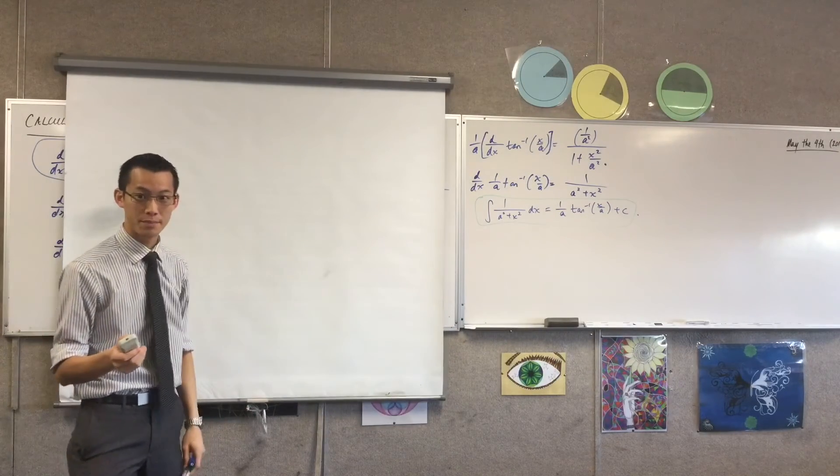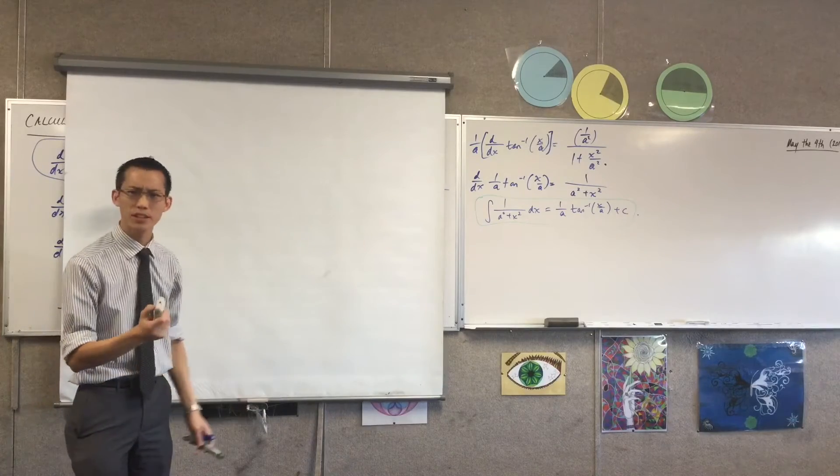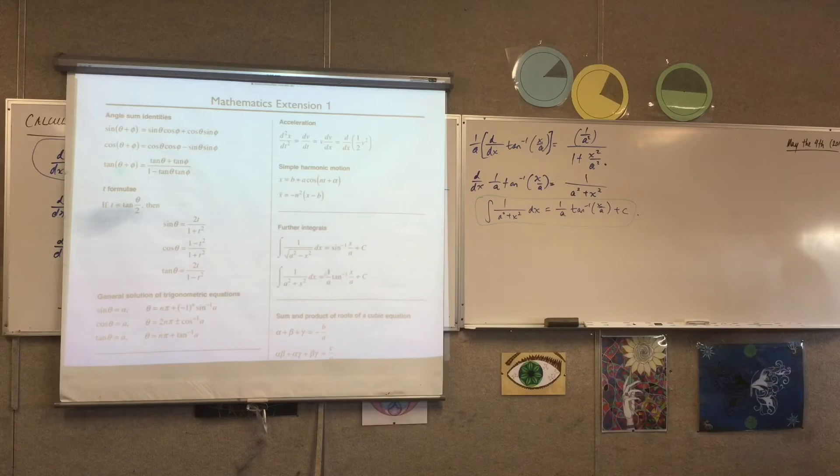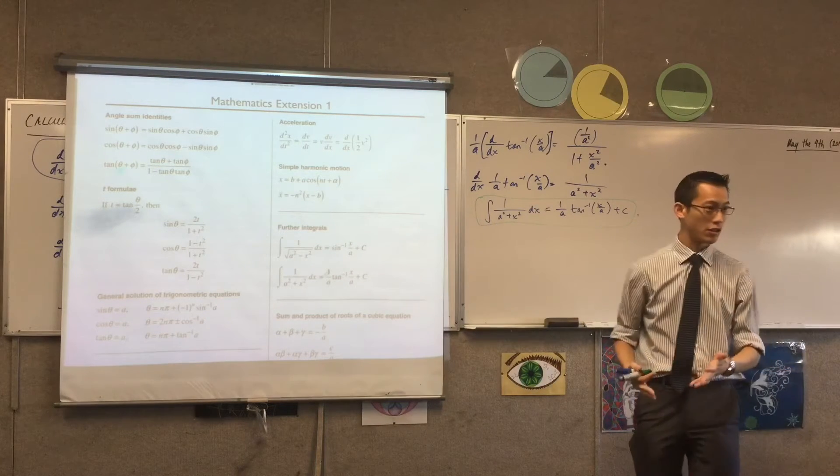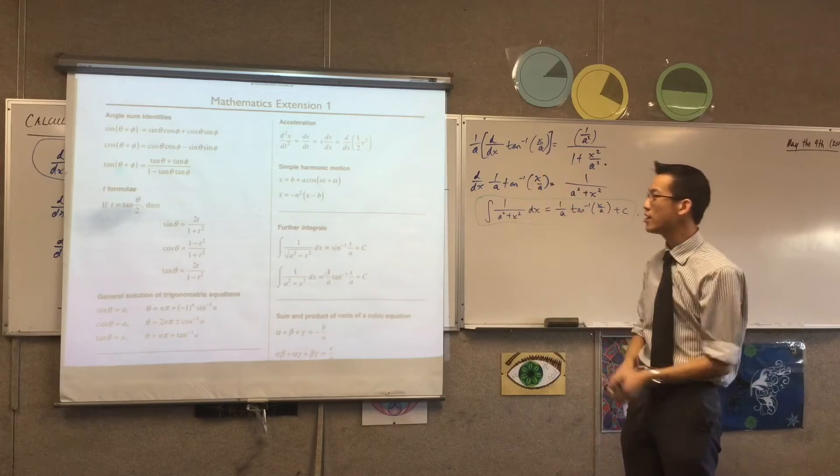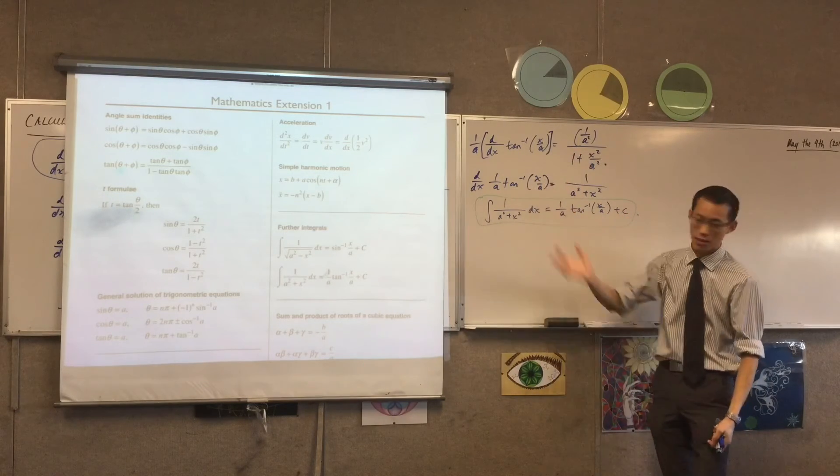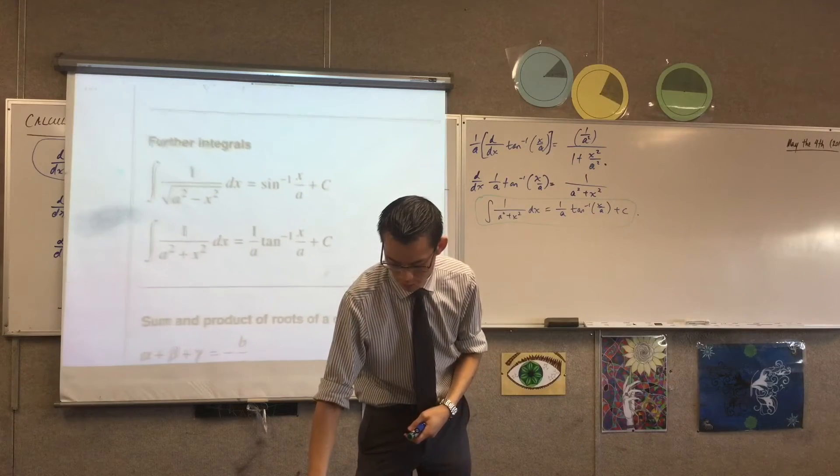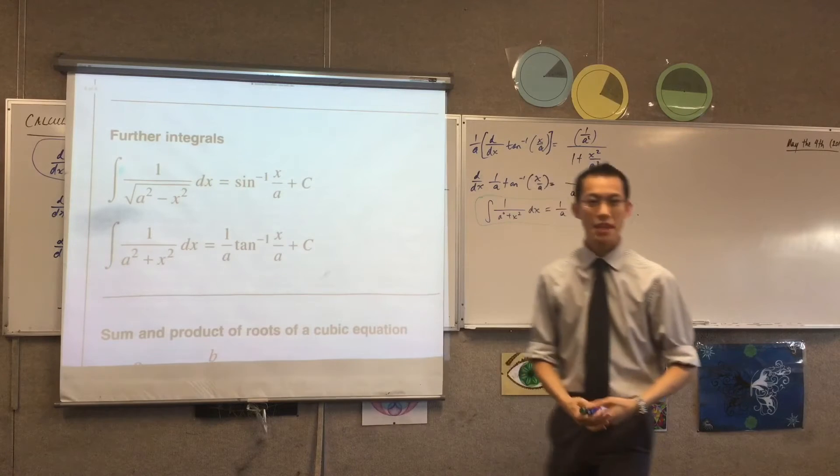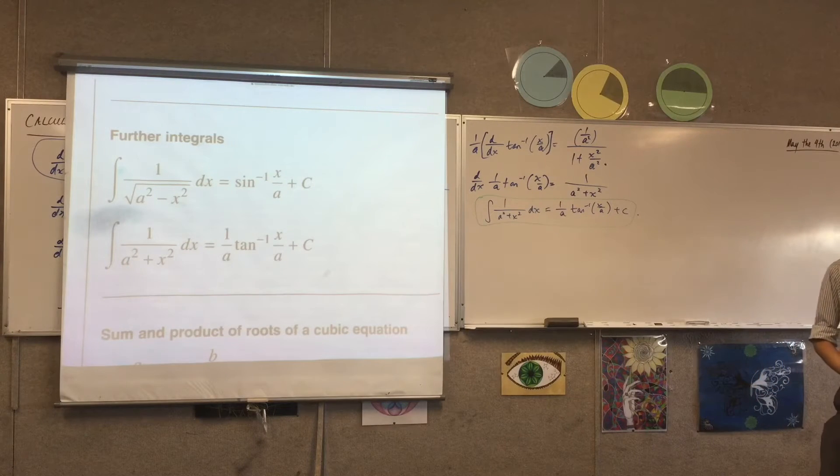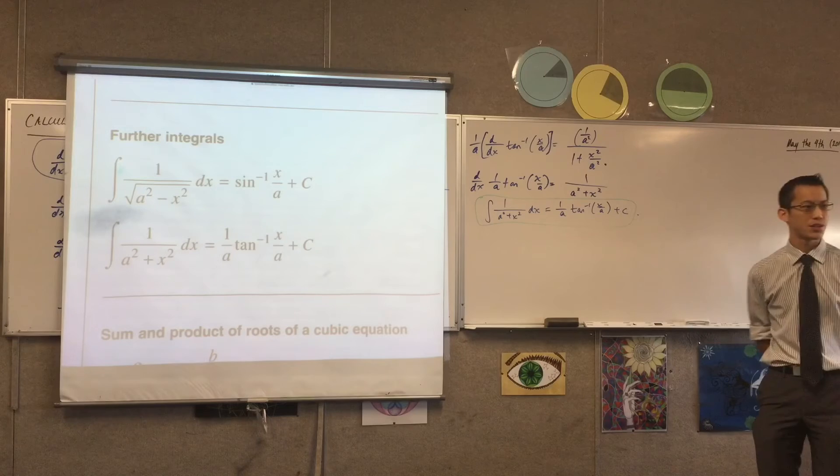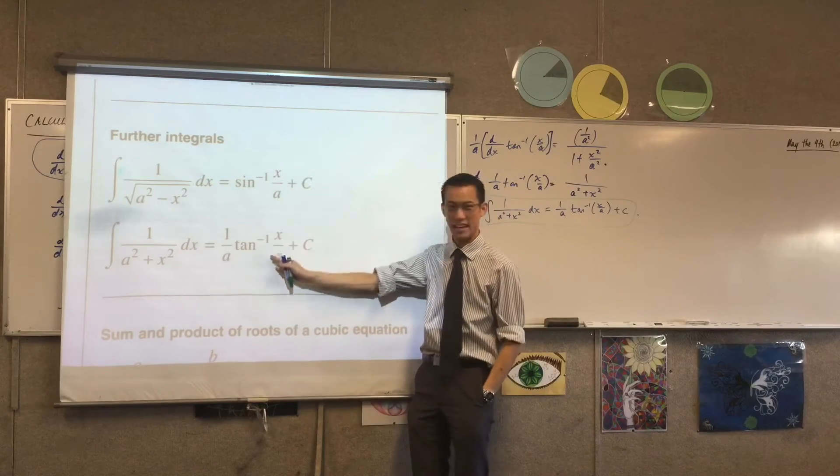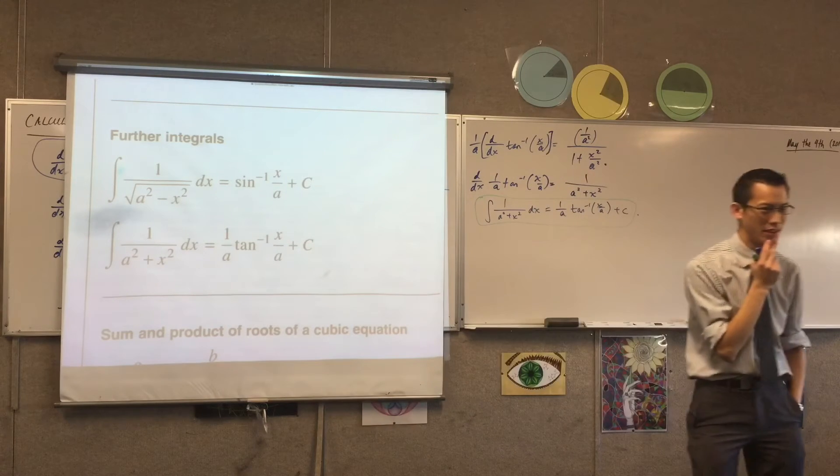So here's page three of the reference sheet, which you've seen and used before. It's page three because this is the extension one page. And so that's why you expect to find an inverse trig there, because there's no inverse trig in two units. So you come over here and it says further integrals. There are the two results that we just proved. They're nice and neat. Except there is a conspicuous absence from our list. There's sine inverse, and there's tan inverse, and where's cos inverse?